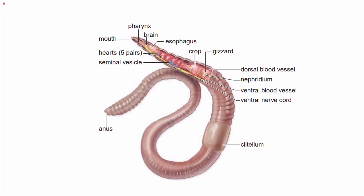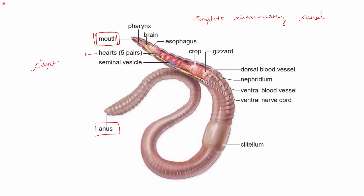Annelids have a complete digestive tract — they have both a mouth and an anus, along with a pharynx, esophagus, crop, gizzard, and intestine. They have a closed circulatory system in which the heart is made up of five pairs of blood vessels. You can see here: one, two, three, four, and five — five pairs of blood vessels together form the heart.